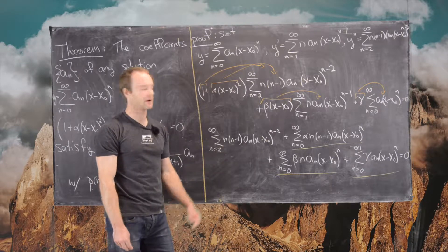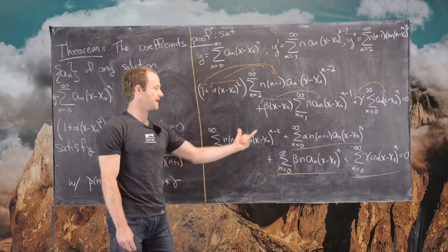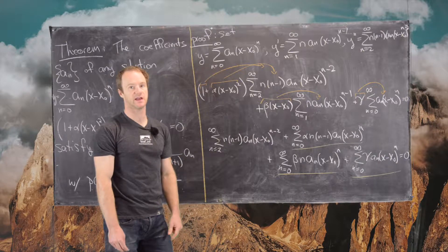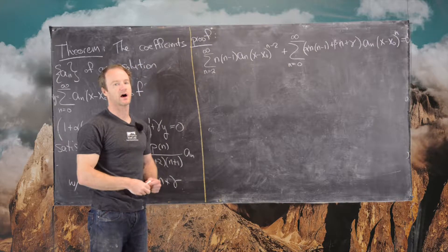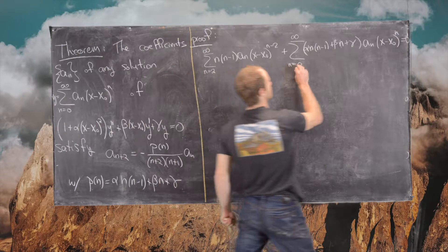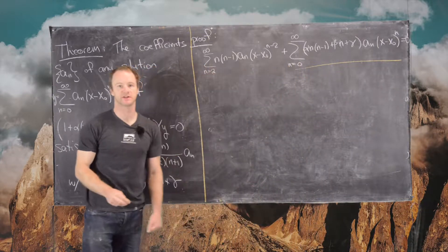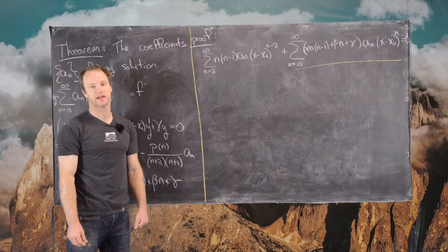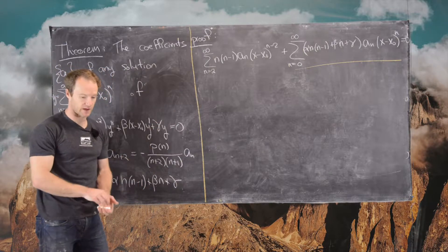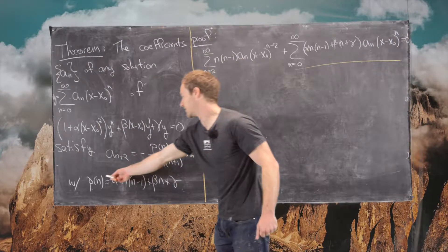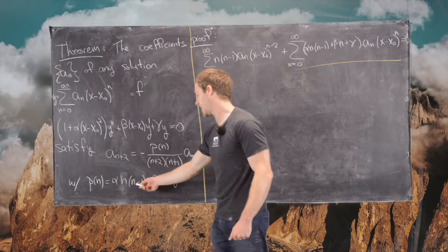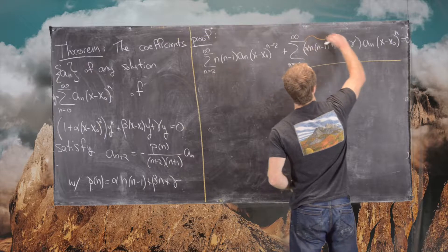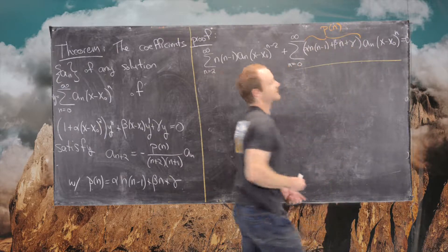After combining those like terms, the a_n and (x−x₀)^n factors out as greatest common factors, giving us the sum of [α·n·(n−1) plus β·n plus γ]·a_n·(x−x₀)^n. Looking back at the theorem, notice that P(n) equals α·n·(n−1) plus β·n plus γ, which is exactly this expression. So we're on the right track. Now we need to re-index the first sum so its power of (x−x₀) matches.